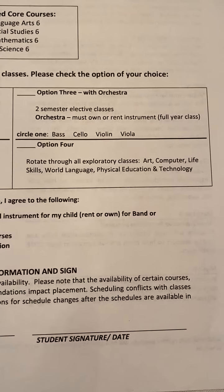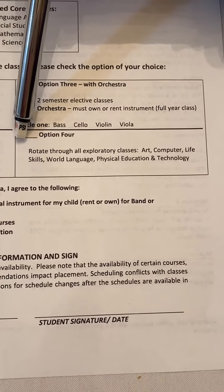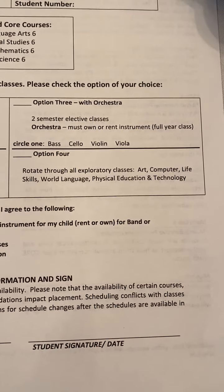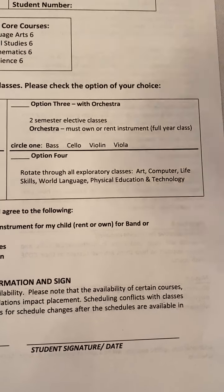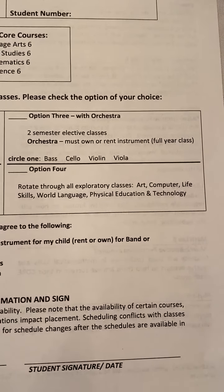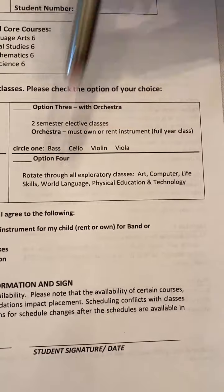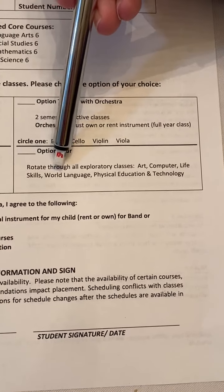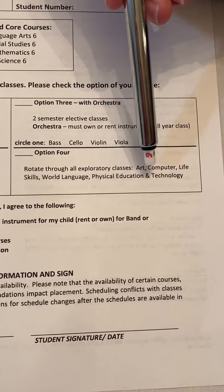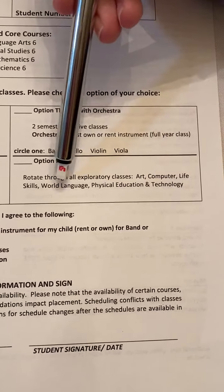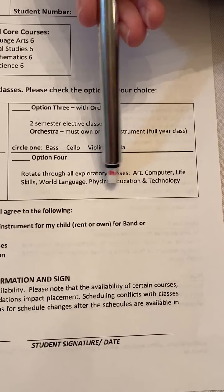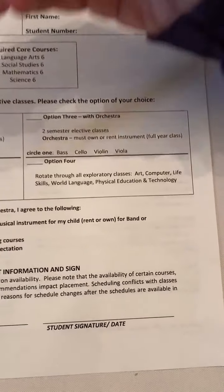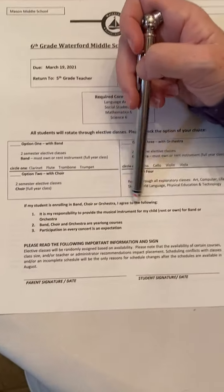The last option is option four. If music is just not your thing — if band, orchestra, and choir are just not your thing — that's okay. You would mark option four. What you would do is rotate through all the exploratory classes like art, computers, life skills, rural language, physical education, and technology.